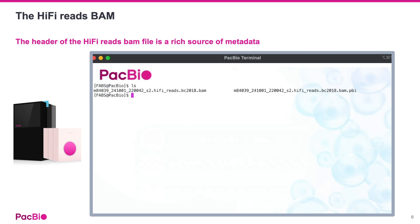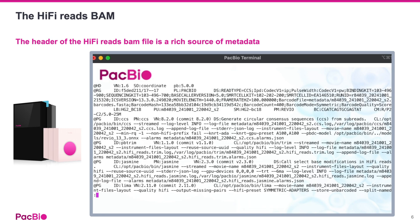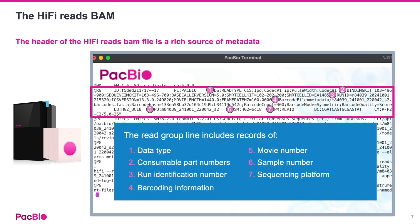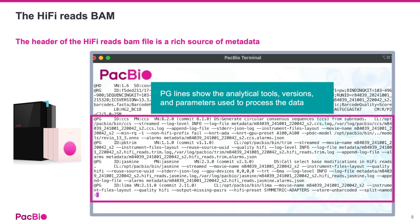The BAM file header contains a variety of metadata. The read group line shown here includes information on the data type, consumables used, the sequencing run identification number, barcoding information, movie identification number, and sequencing platform. Similarly, the program group lines show the bioinformatic programs that have been run on the data along with the version number and specified options.